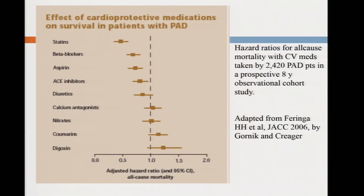In the average person with intermittent claudication, beta blockers are not a problem — there are many good reasons to put people on a beta blocker for their heart, and patients can tolerate it without impairment of walking distance. A nice summary by Heather Gornick and Mark Krieger showed the benefit of statins, beta blockers, aspirin — though clopidogrel is better — and ACE inhibitors. Virtually every patient with PAD should be on all of those therapies because of their vasoprotective effects.